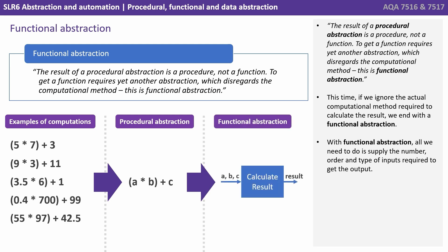So what about functional abstraction? Well, the result of procedural abstraction is a procedure, not a function. To get a function requires yet another abstraction which disregards the internal computational method. This is functional abstraction. We ignore the actual computational method required to calculate the result. With this, all we need to do is supply the correct number, order and type of inputs required in order to get the output.